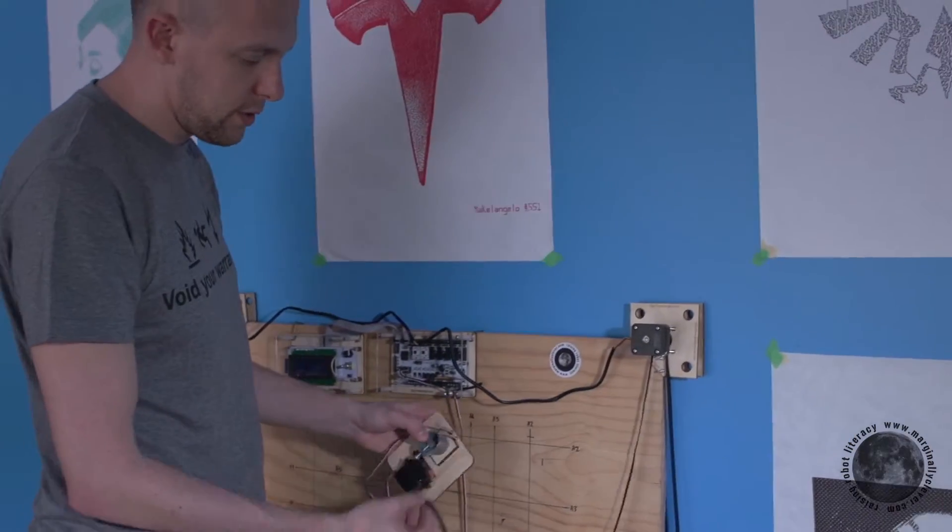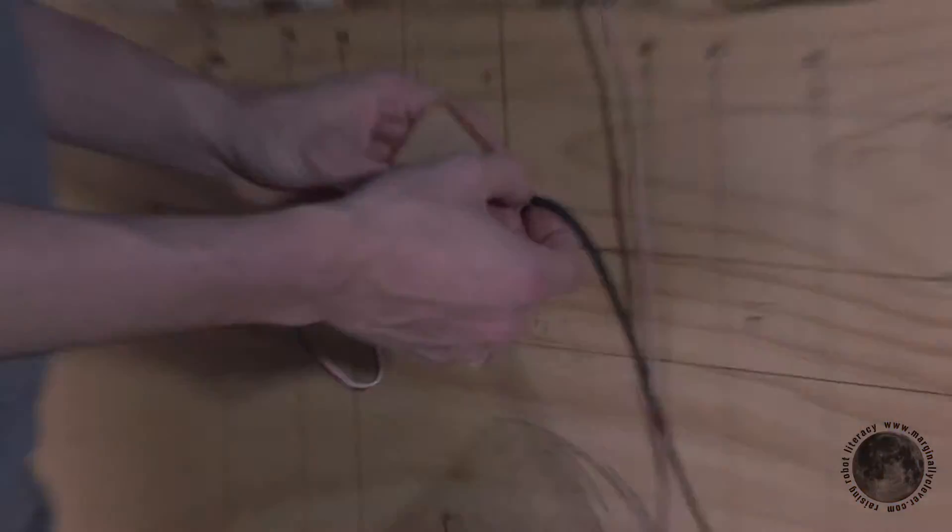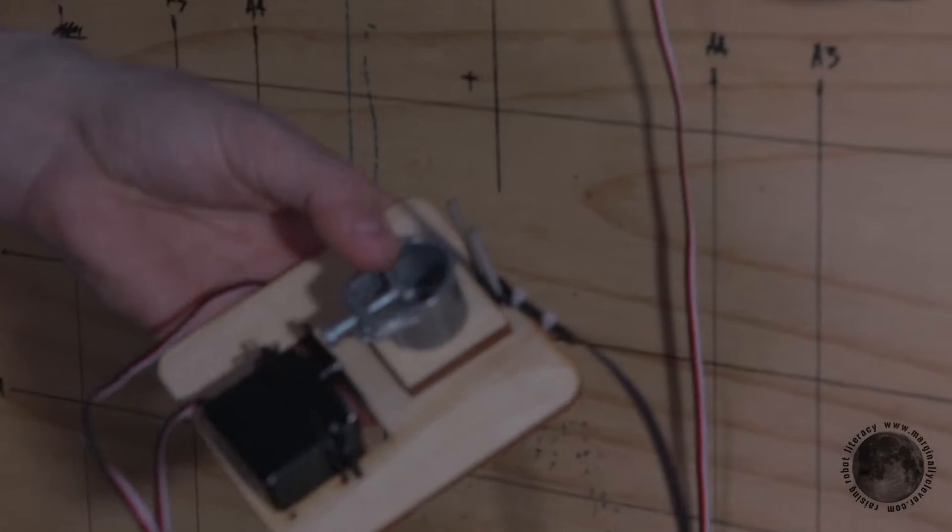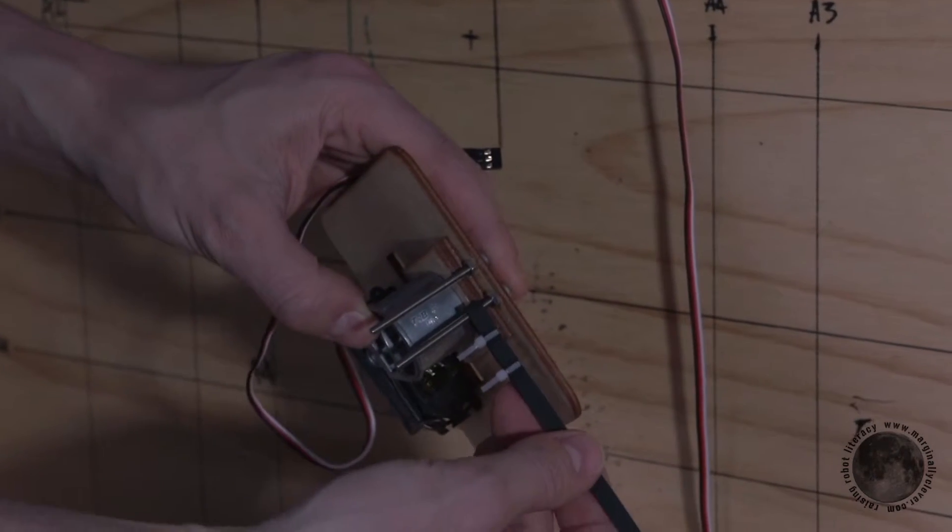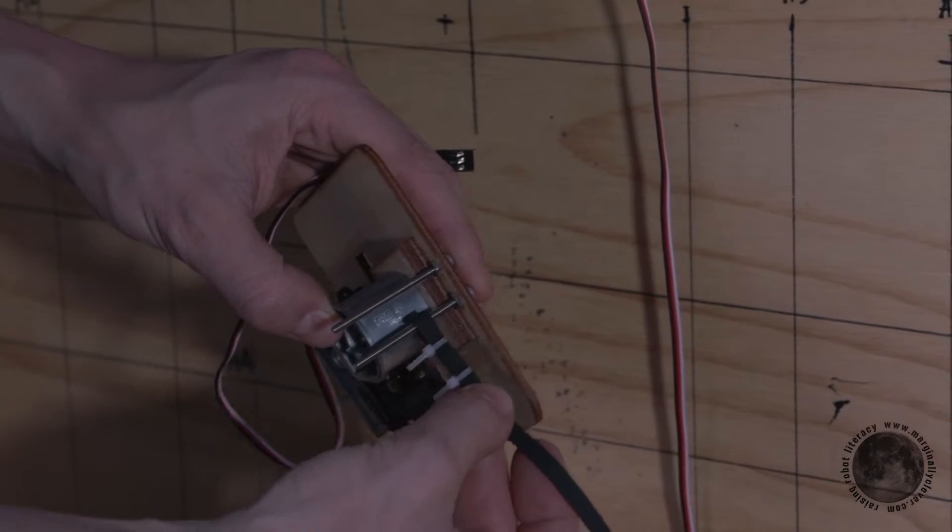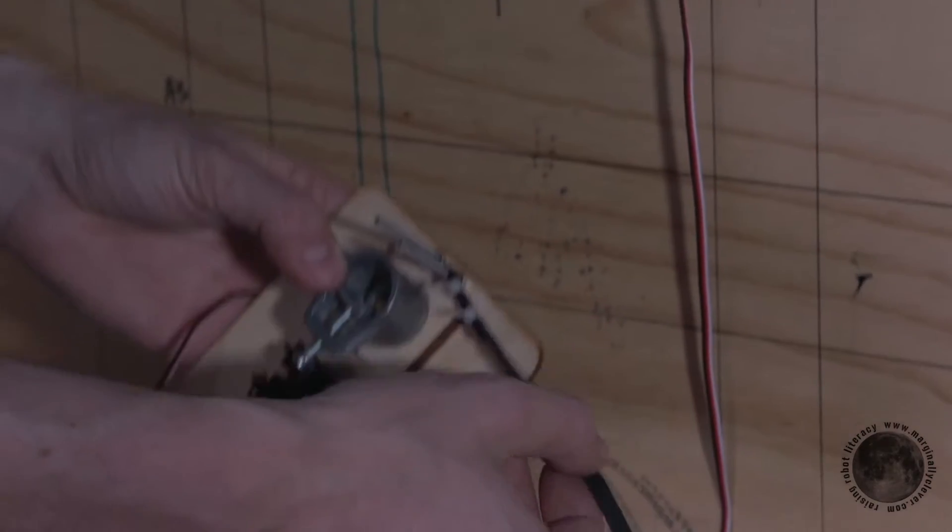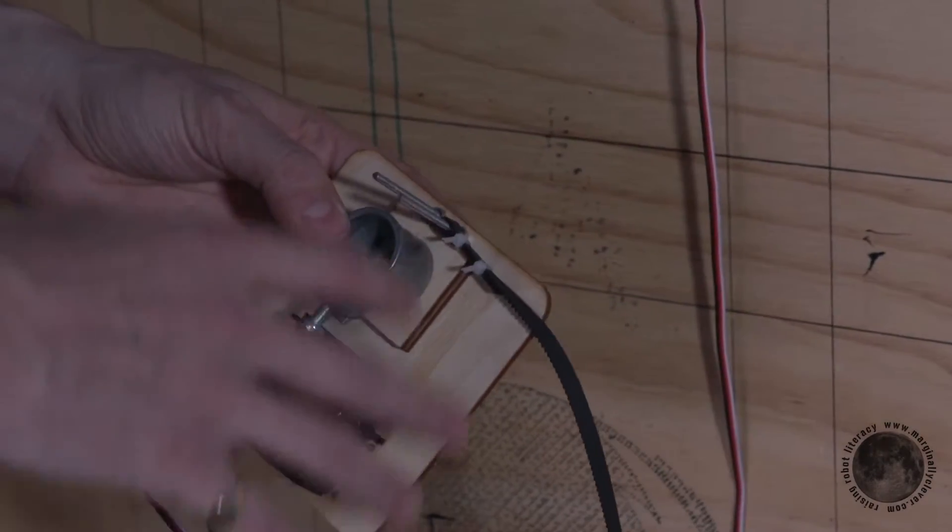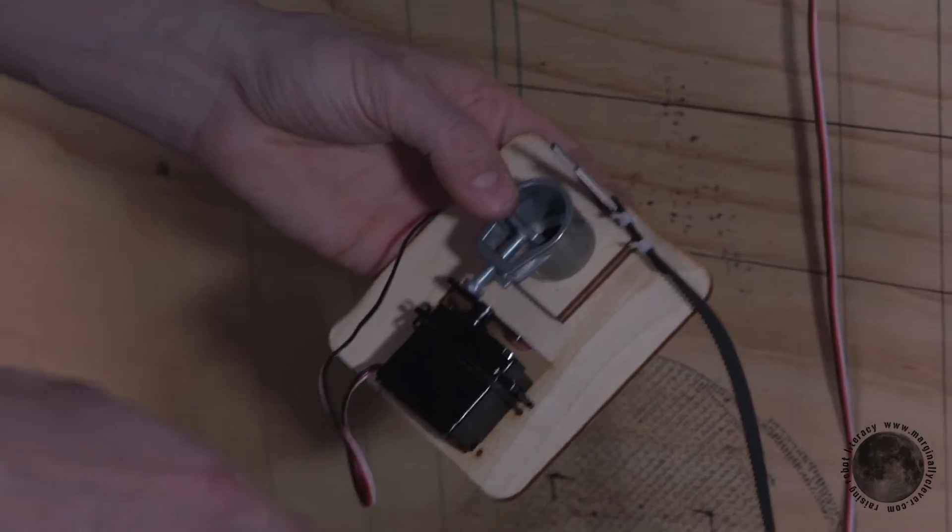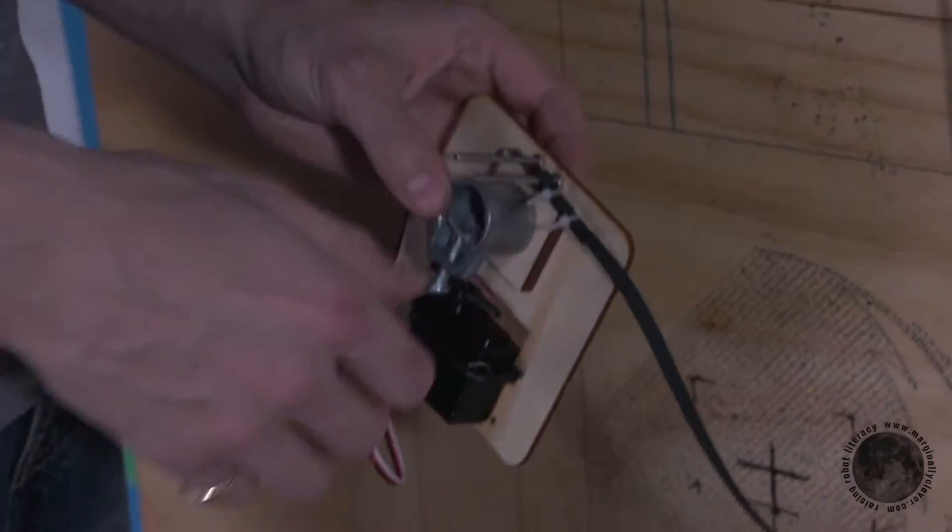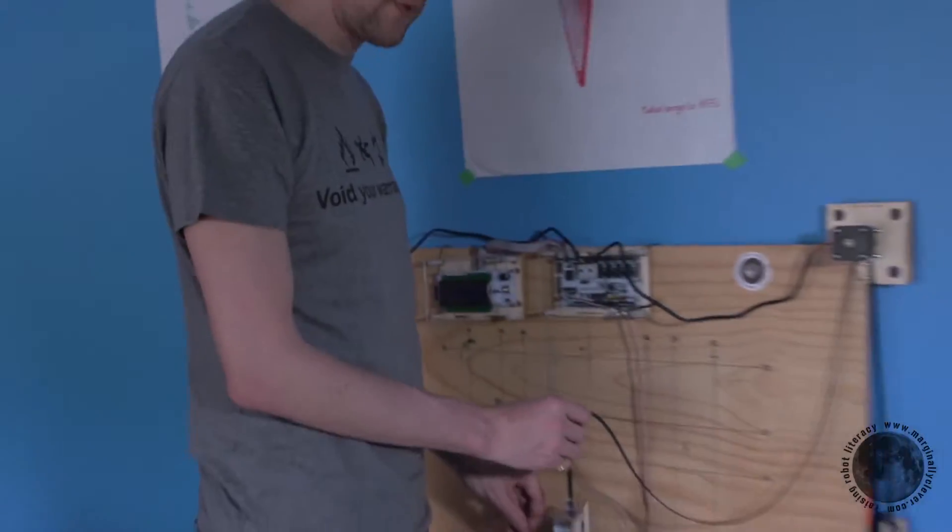Now for the pen holder it's as simple as putting the loop over the screw. The belt position can be adjusted to get good based on the type of marker that you put in and the size of your board. It changes the balance over time.